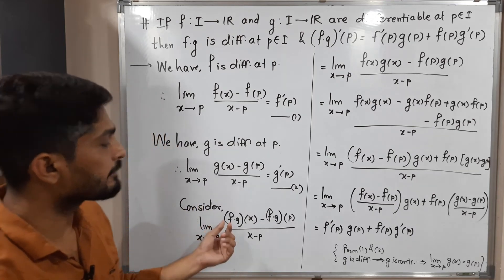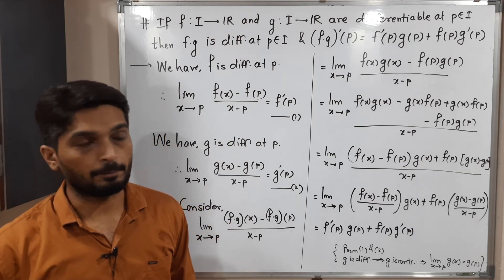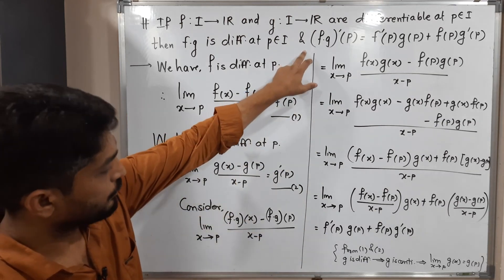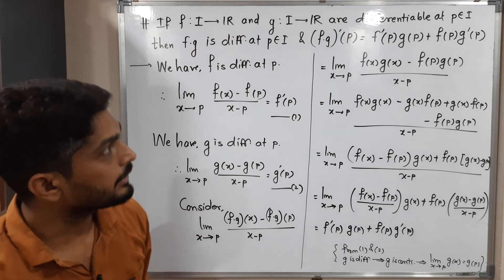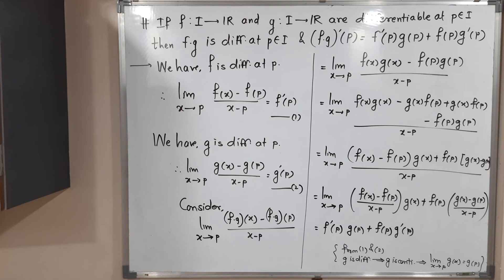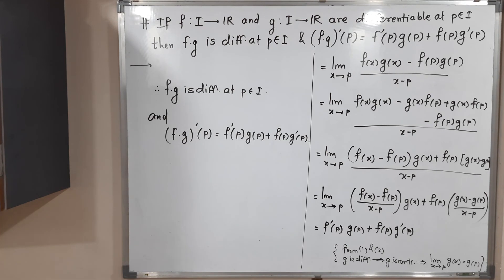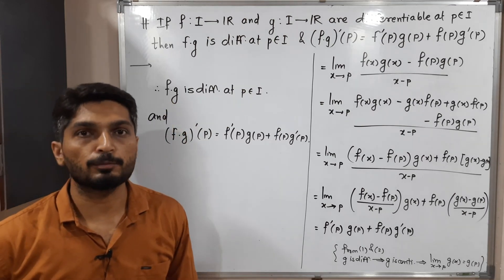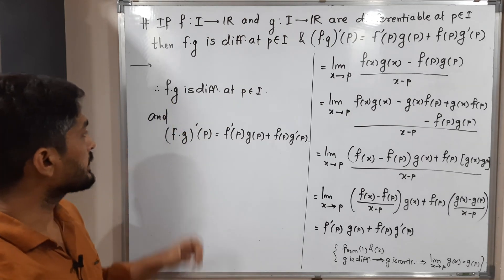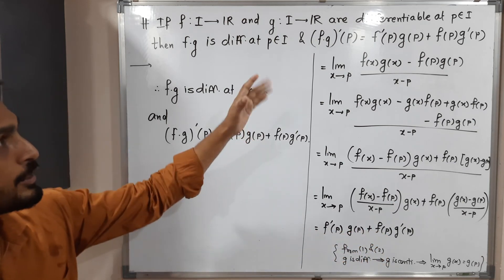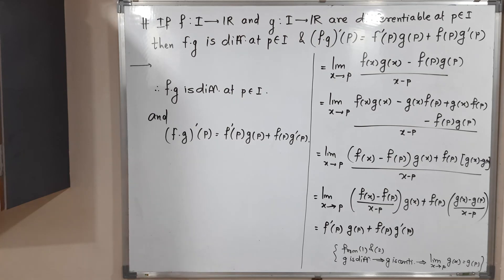The limit exists, so we can declare that f into g is differentiable at p and its derivative is f dash of p times g of p plus f of p times g dash of p — exactly what we wanted to prove. Therefore f into g is differentiable at point p, and this is its derivative. Thank you, bye bye.